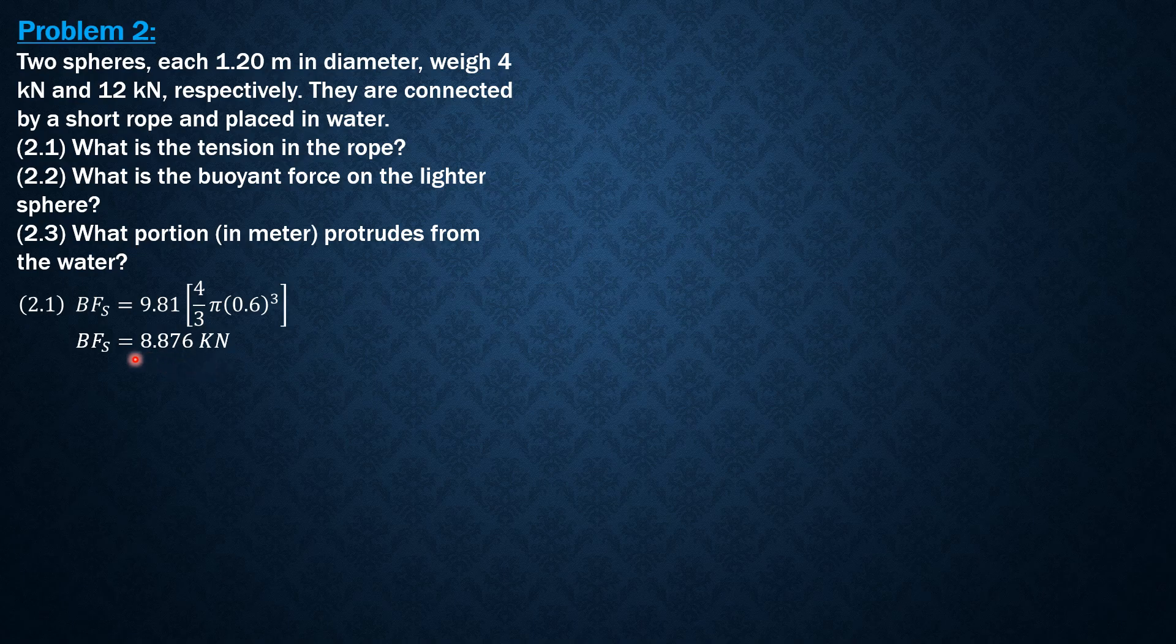And if we double this 8.876 kilonewtons, that's 17 point something kilonewtons, which is greater than the total weight of the two spheres, which is 4 plus 12, which is only 16. And since 8.876 is less than 12, therefore, the lighter sphere is partially submerged while the heavier sphere, 12 kilonewtons, is totally submerged.